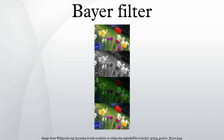The filter pattern is 50% green, 25% red and 25% blue, hence is also called RGBG, GRGB, or BGGR. It is named after its inventor, Bryce Bayer of Eastman Kodak.